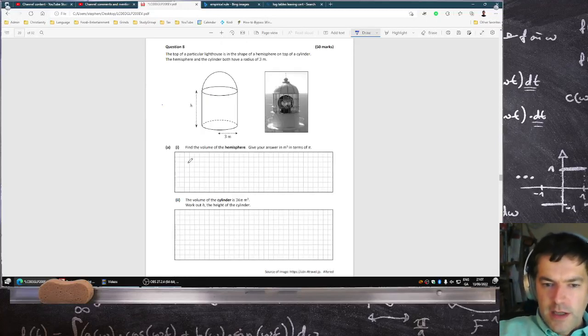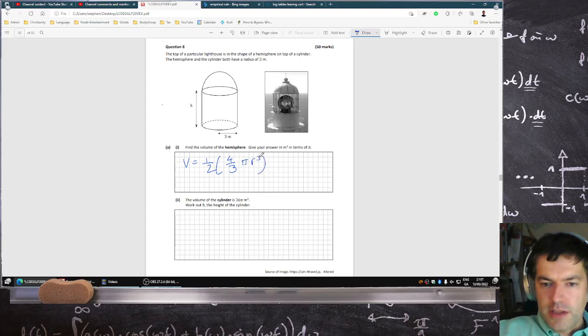Find the volume of the hemisphere. The hemisphere is half a sphere, which is 4 over 3 pi r cubed, and the r is 3. So that's going to be a half times 4 over 3 times pi, and 3 cubed is 27. That works out to be 18 pi, I believe.